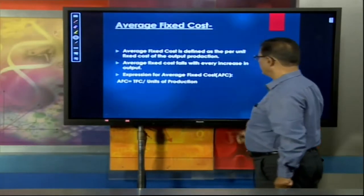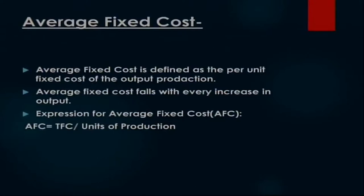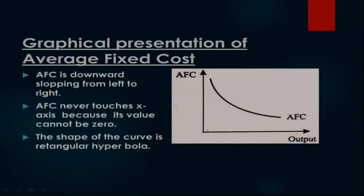Let us discuss about the average fixed cost. AFC = TFC upon units of production — graphical presentation of average fixed cost। जब तुम 10 rupees को different units से divide करोगे, तो ये values आएंगी। First unit के लिए AFC = 10 rupees होगा, उसके बाद ये reduce होता जाएगा — 5, 3.33, 2.5, and so on।